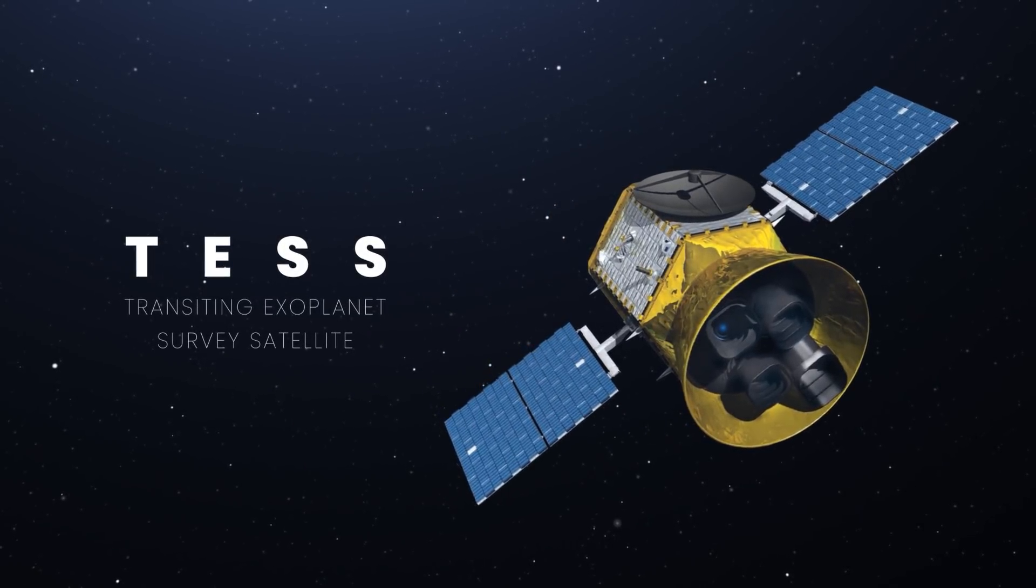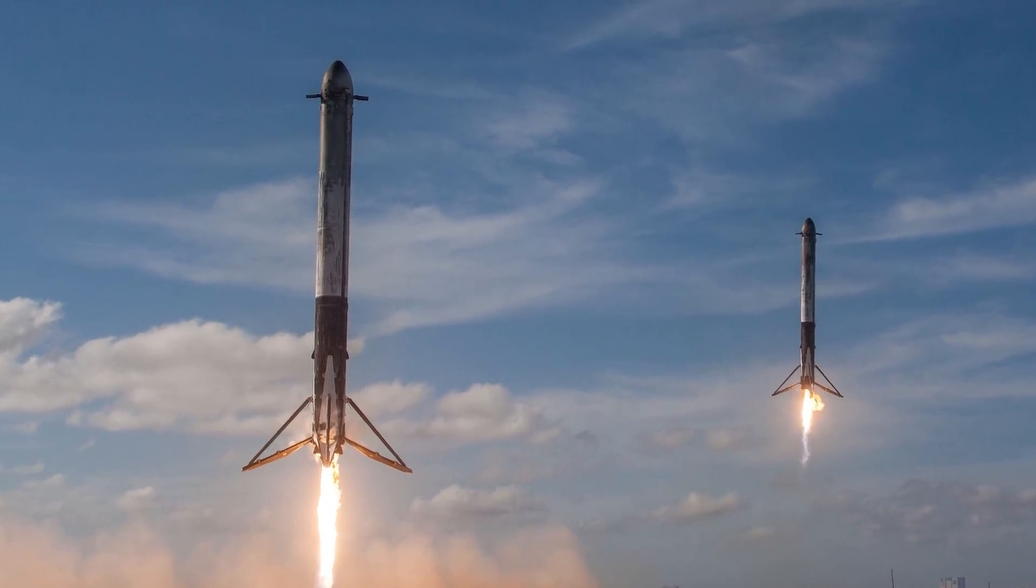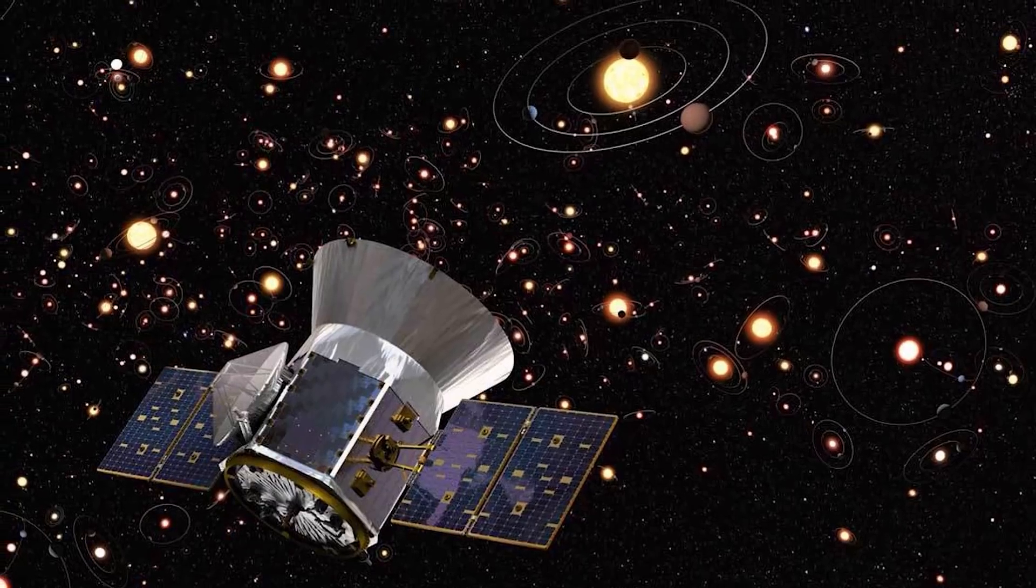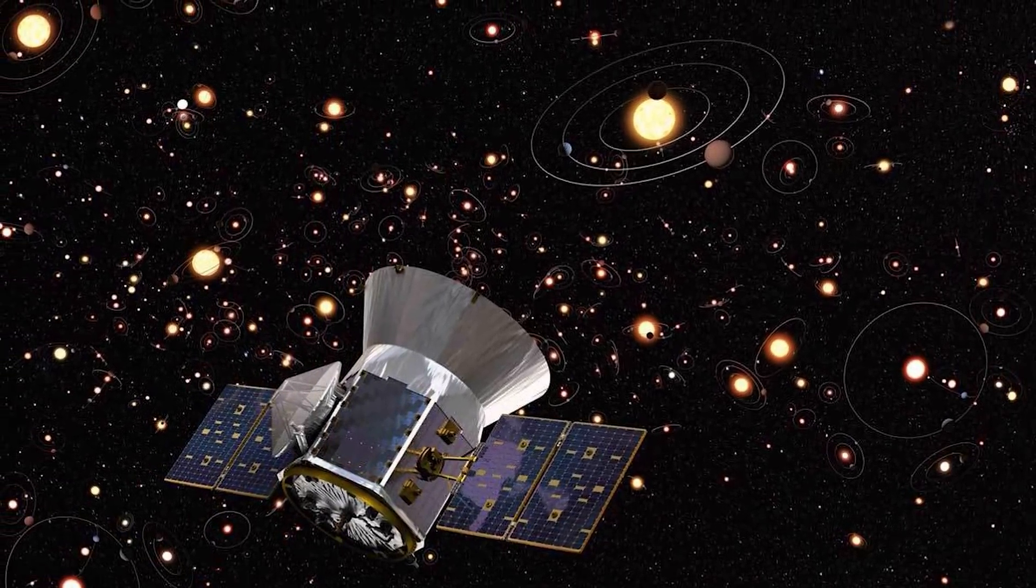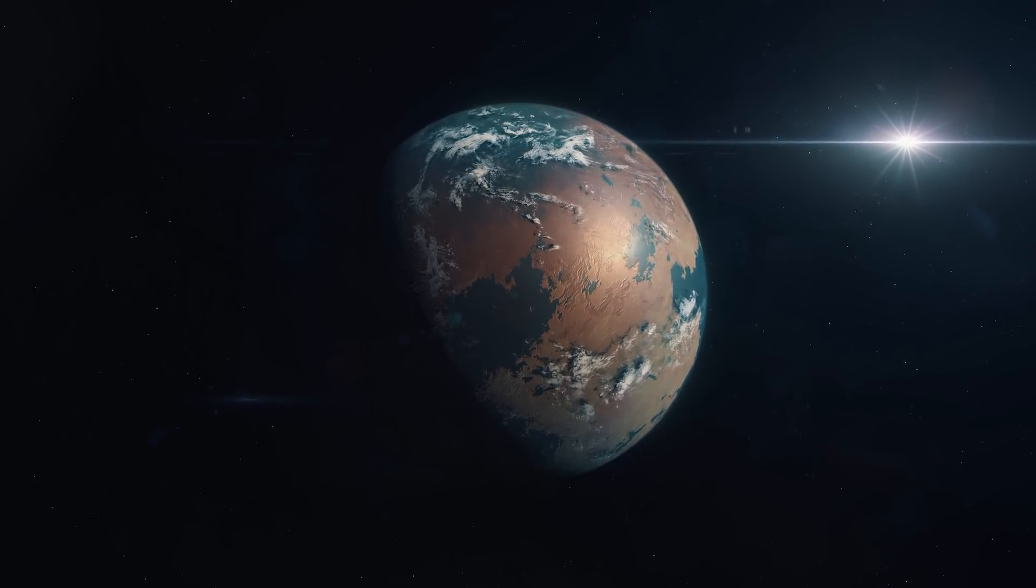And it launched aboard a SpaceX Falcon 9 rocket back in April 2018. Right now, TESS is our best and most adept planet finder. And it's found more than 2200 candidate planets orbiting bright stars, and hundreds of those could be rocky worlds similar to Earth.